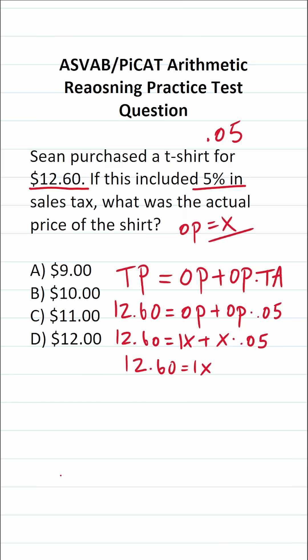And what is 0.05 times x? That's 0.05x. So this is 1x plus 0.05x. You should be able to do this part here mentally. What is 1x plus 0.05x? Well, what is 1 plus 0.05? That's going to be 1.05x.